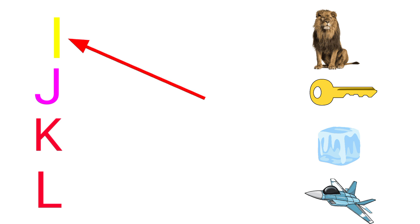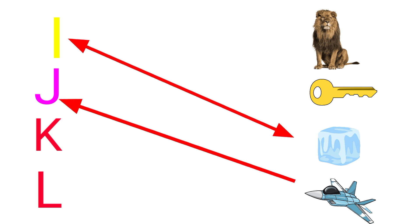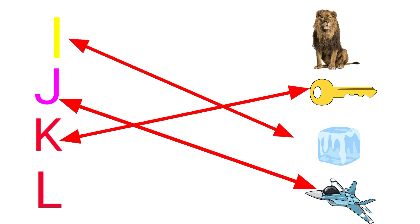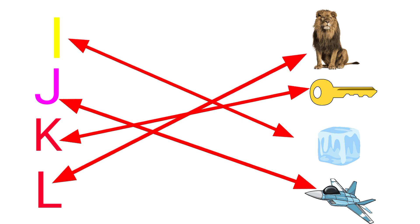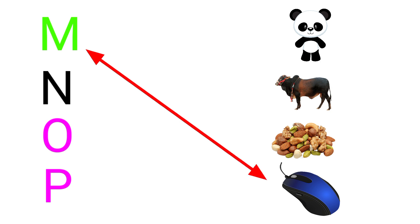I for Ice, J for Jet, K for Key, L for Lion, M for Mouse.